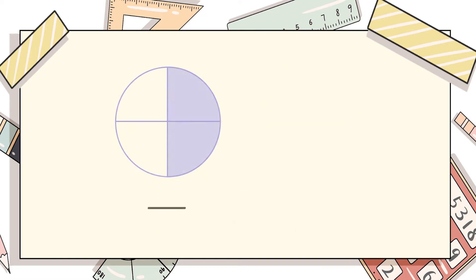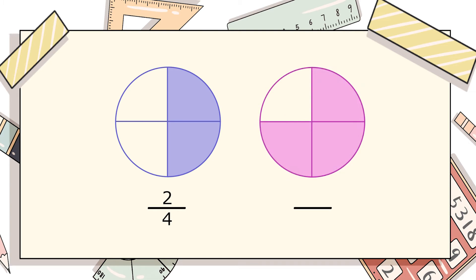Let's see another example. In this pictorial graph, the total number of parts is 4 and the colored parts are 2, so our fraction is 2/4. In the next part of the same picture, we have 3 colored portions out of 4, so the fraction is 3/4. We can easily see 3 is larger than 2, so the alligator sign opens towards 3/4.